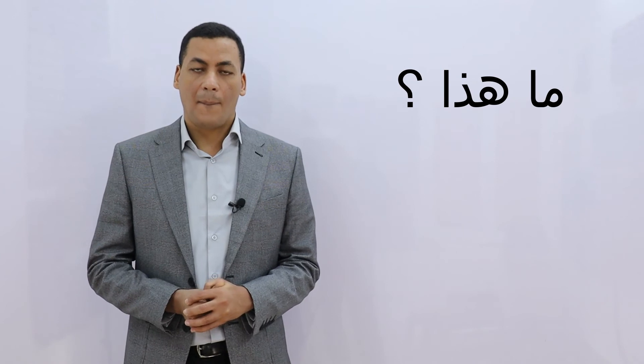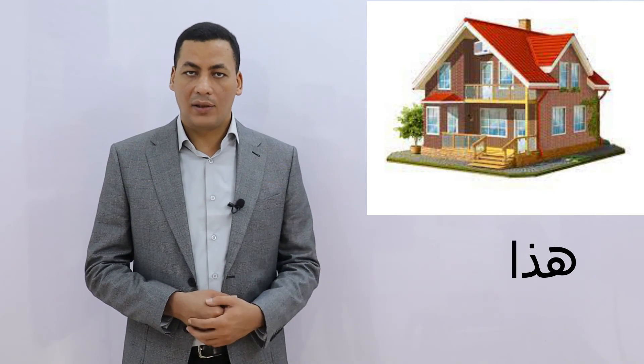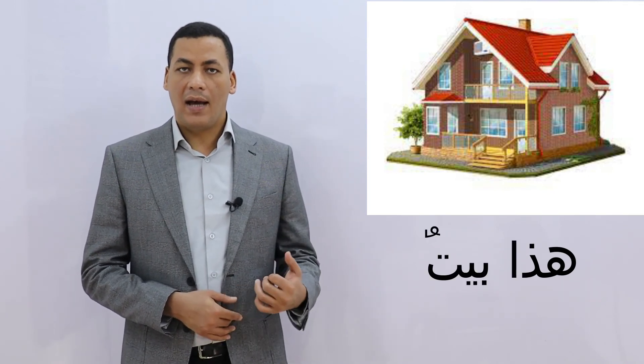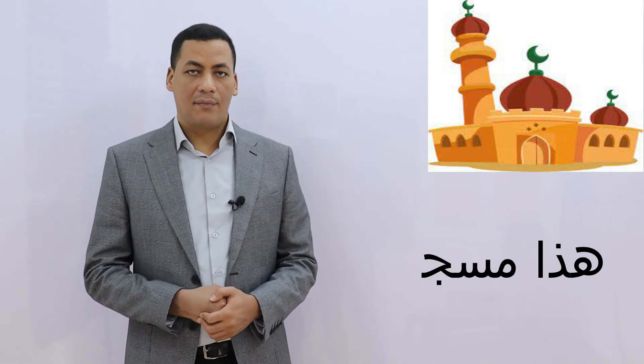If you want to ask 'what is this?', we use 'ma', and we use 'ma' for objects — things, not human beings. So to ask 'what is this?' you would say 'ma haza'. Let's practice: 'ma haza?' — 'haza baytun' (this is a house); 'ma haza?' — 'haza masjid' (this is a mosque).